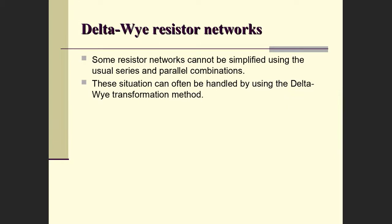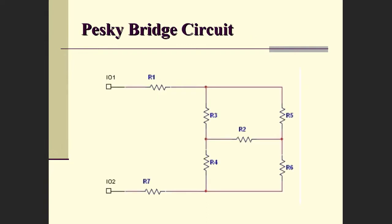Why do we bother with this? Some resistor networks cannot be simplified using the usual series and parallel rules we looked at in the first half of our semester. However, the situation can be resolved by using the delta-Y transformation. To get you familiar with that idea, we give you a lab to build a circuit — and for lack of a better term, I call it a pesky bridge problem.